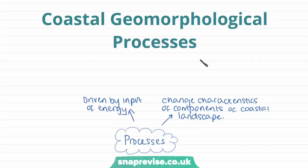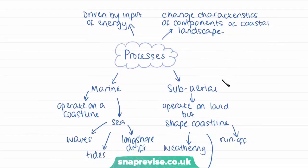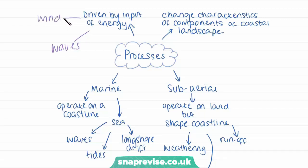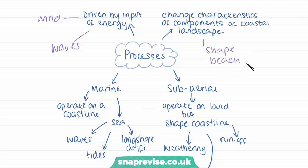To begin with, we're going to look at coastal geomorphological processes in a wider viewpoint. Overall, these processes are driven by an input of energy, and this energy tends to come from either the water through the waves, or from wind. These processes tend to change the characteristics of the components of the coastal landscape, such as the shape of the beach, the cliffs, and other geomorphological features like sand dunes.